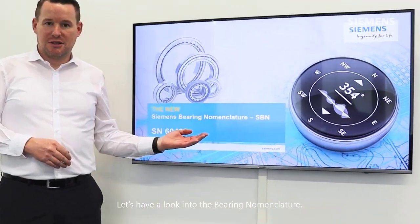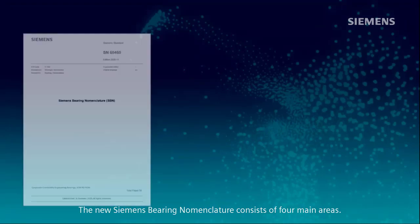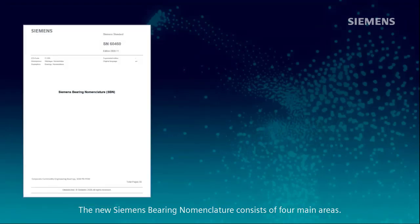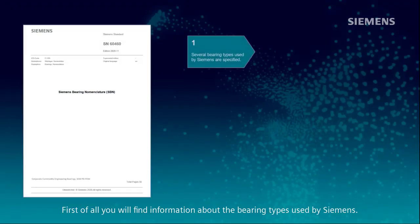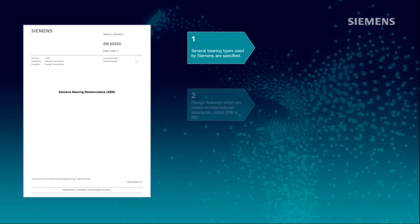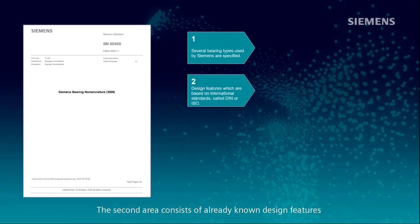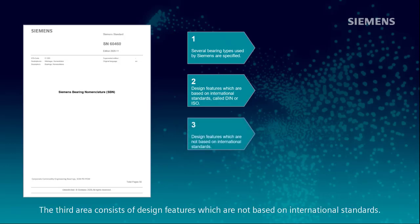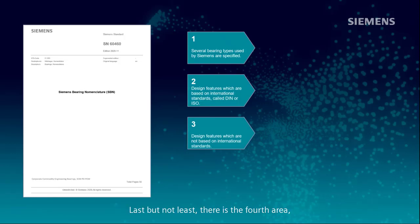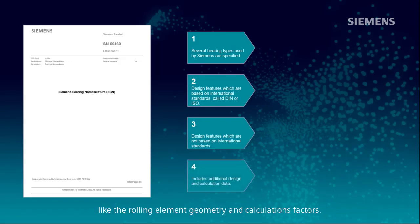Let's have a look into the bearing nomenclature. The new Siemens bearing nomenclature consists of four main areas. First, you will find information about the bearing types used by Siemens. The second area is based on international standards called DIN or ISO. The third area consists of design features which are not based on international standards. Last but not least, the fourth area consists of additional design features like rolling element geometry and calculation factors.